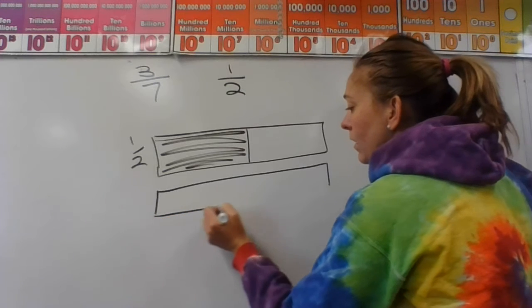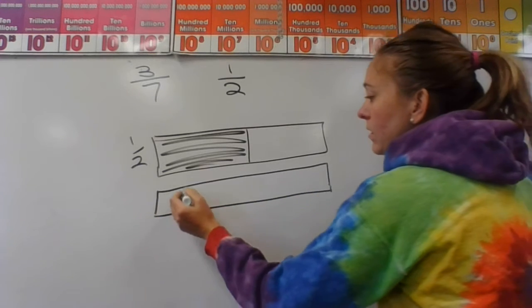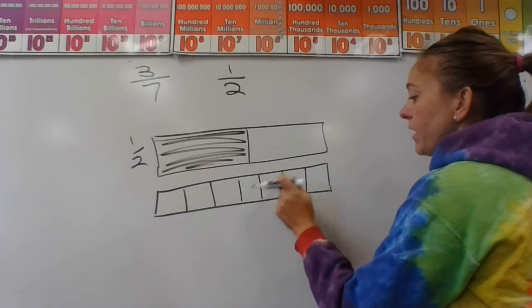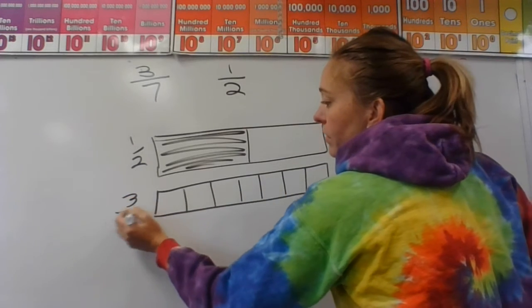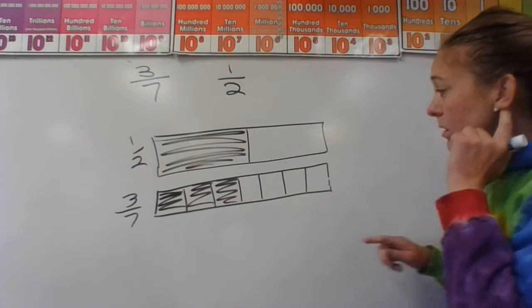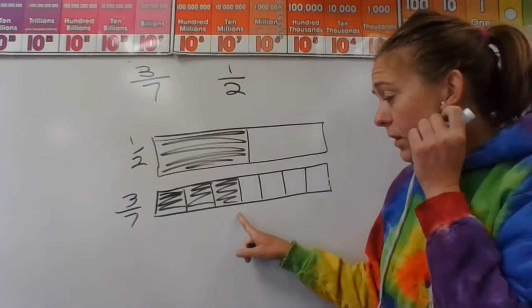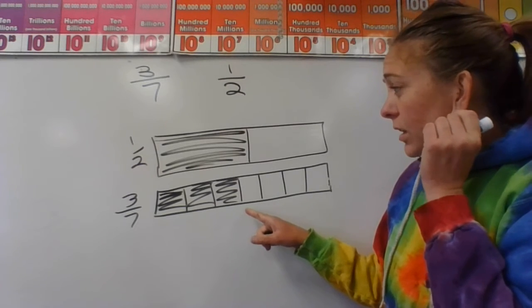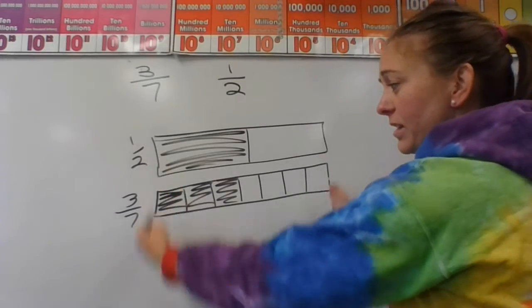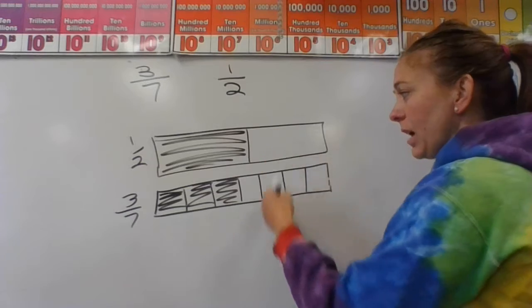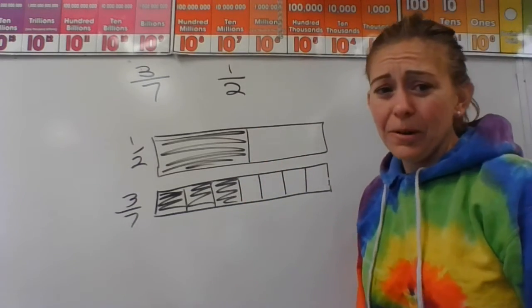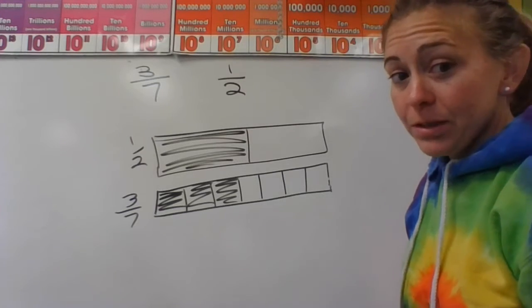I'll draw this one out — sevenths. I count out seven sections, then draw my one half tape diagram with seven sections as well, and shade in three sevenths. This one looks like it's probably smaller than one half. However, when you draw them, you're only human and can't get those lines exactly right — my middle line might not be precise. So it's so close that you're just thinking, 'I'm not really sure, it's probably less than one half.'